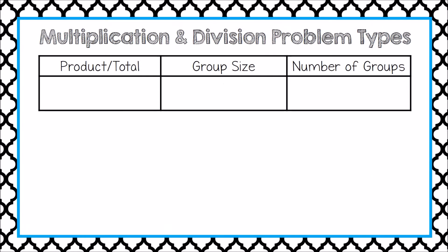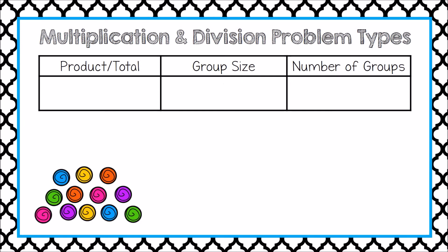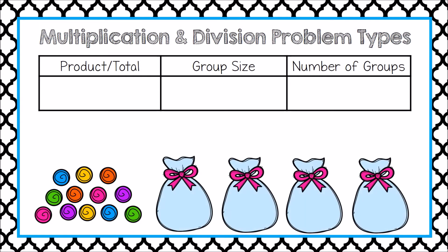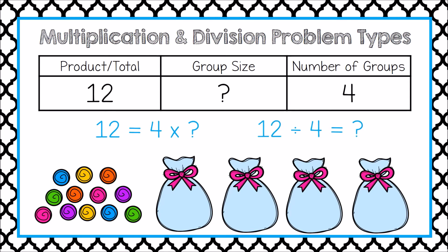Here's another example. Miguel has 12 candies. If he puts an equal amount in each of his four bags for his four friends, how many candies will be in each bag? Here, we know the total amount or the product, and we know the number of groups. We just don't know the group size. So this can either be seen as a multiplication problem with an unknown factor, or as a division problem.